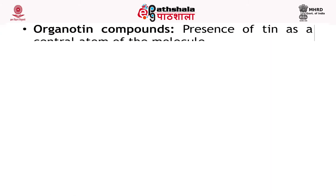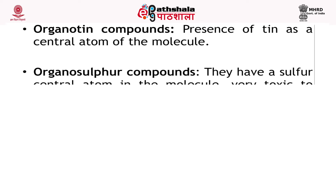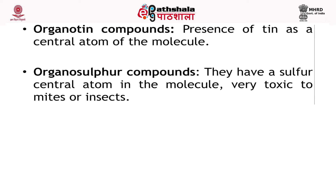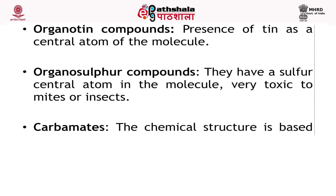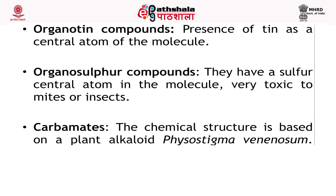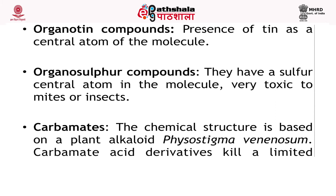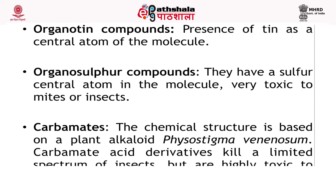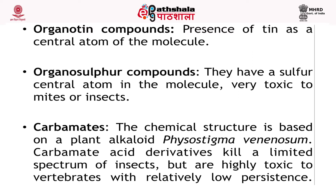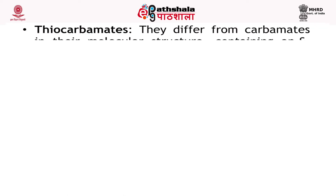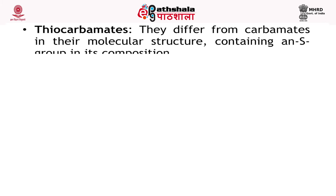Organotin compounds have tin as the central atom of the molecule. Organosulfur compounds have a sulfur central atom in the molecule and are very toxic to mites or insects. Carbamates — the chemical structure is based on the plant alkaloid physostigma venenosum. Carbamate acid derivatives kill an unlimited spectrum of insects, but are highly toxic to vertebrates with relatively low persistence. Example: carbaryl. Thiocarbamates differ from carbamates in their molecular structure, containing a sulfur group in their composition.